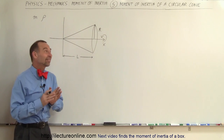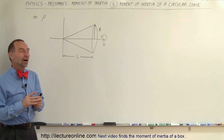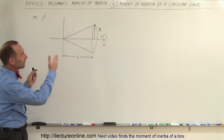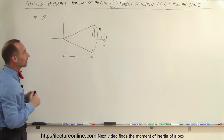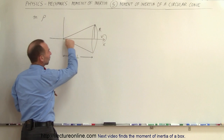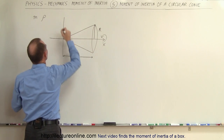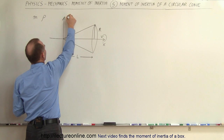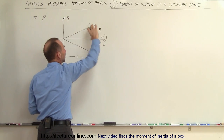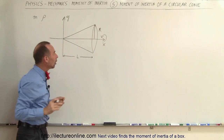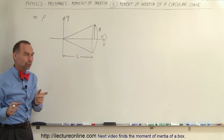Welcome to ElectronLine. In this example we're going to show you how to find the moment of inertia of a truncated cone — a circular cone that rotates about its axis. The axis runs along the x-axis, and this is the y-axis. The length is equal to L, the radius at the base is equal to R, the mass is M, and the density is rho.